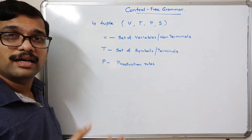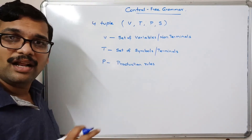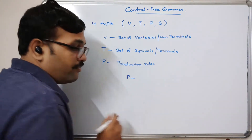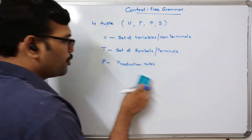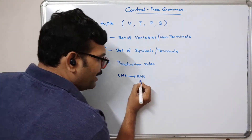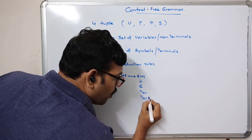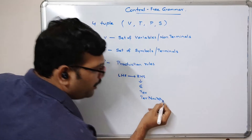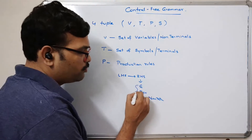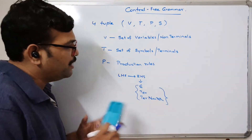The difference between regular grammar and context free grammar lies in the production rules. In regular grammar, the production is defined as LHS tends to RHS, where the right hand side can be epsilon, a terminal, or a terminal with a non-terminal. These are the common rules to follow for regular grammar.